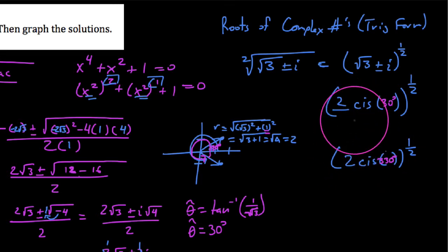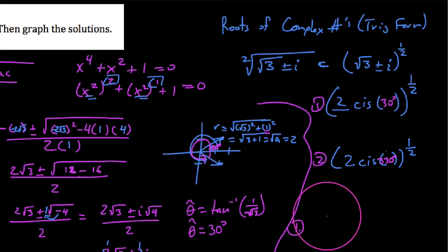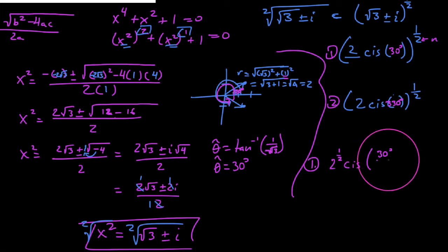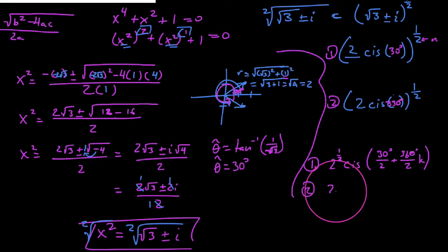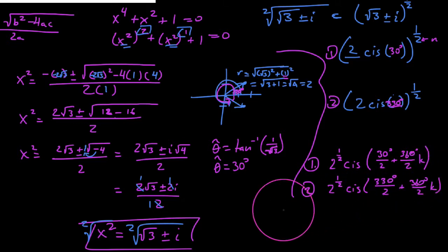So now here's where we get to find all of our roots. In the first possible case, we're going to say we have to take 2 to the 1/2 times cis of 30 degrees over n plus 360 degrees over n times k, where n is 2. In the second possible case, we get 2 to the 1/2 times cis of 330 degrees divided by 2, plus 360 degrees divided by 2 times k. We're going to evaluate for k equals 0 and k equals 1 — we don't have to go to k equals 2 because we always go up to 1 less than the root we're taking.